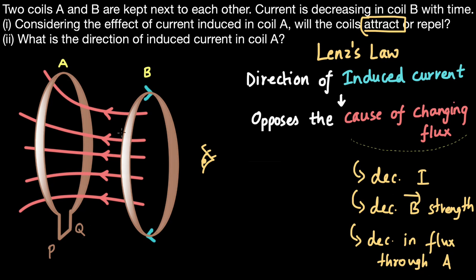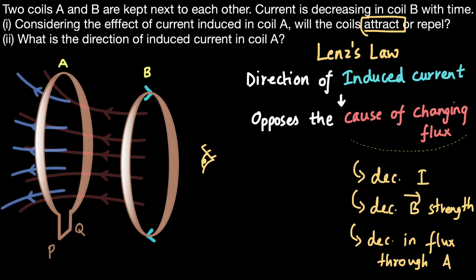The induced current in coil A must try to oppose the decreasing flux. The current is decreasing, so the strength of the magnetic field lines decreases — they start disappearing, gradually fading. This decreases the flux passing through A, and coil A doesn't like that; it wants to maintain the same flux. So it tries to support this existing flux by creating a magnetic field in the same direction.